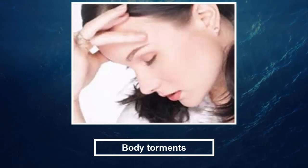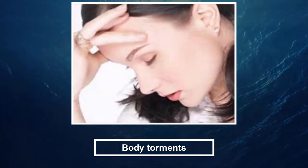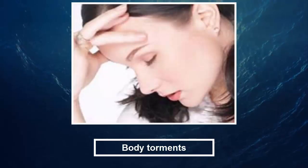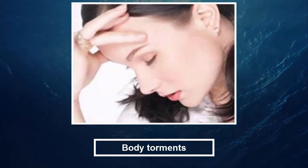Fortunately, folate deficiency can be resolved as quickly as it sets in, and the easiest way is through your diet. Try eating lots of dark green veggies like broccoli, brussels sprouts and asparagus, as well as citrus fruits and fortified breakfast cereals. Folate is also vital for pregnant women, as it aids in the development of a healthy spinal cord when the baby is very young. If you are pregnant, or planning to become pregnant, you should consider a folic acid supplement.